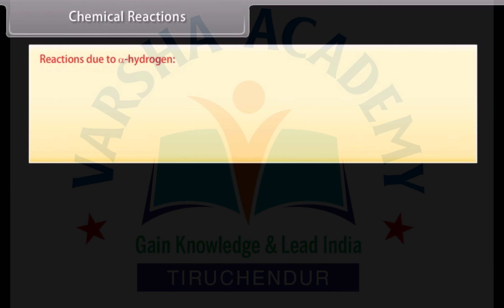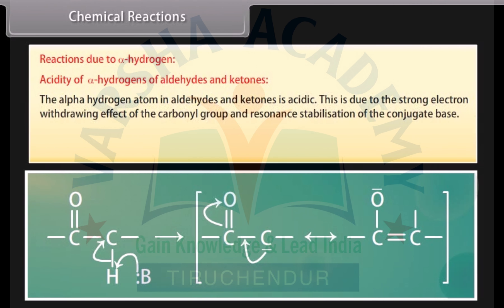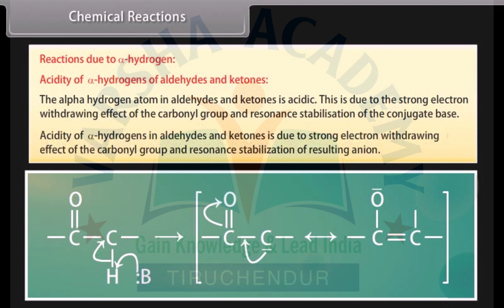Reactions due to alpha hydrogen — acidity of alpha hydrogens of aldehydes and ketones: the alpha hydrogen atom in aldehydes and ketones is acidic. This is due to the strong electron-withdrawing effect of the carbonyl group and resonance stabilization of the conjugate base. The acidity of alpha hydrogens is due to the strong electron-withdrawing effect of the carbonyl group and resonance stabilization of the resulting anion.